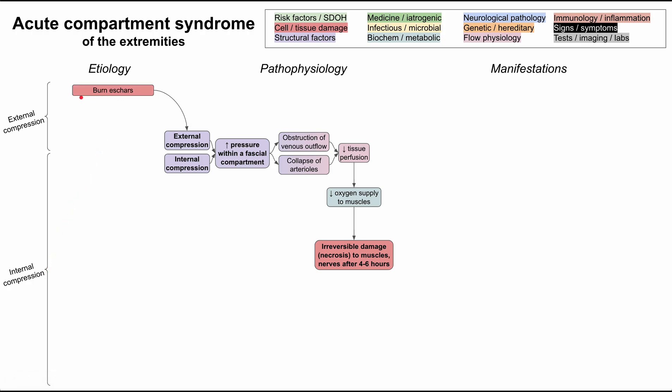Starting with external compression: burn eschars are circumferential burns that cause inflammation and tightening around a limb from the outside, causing external compression. It's also possible after a bone fracture to apply bandages or a cast too tight before the limb has stopped swelling. You must wait for the limb to reach its maximum circumference before applying any constrictive bandage or cast — otherwise the limb continues swelling under the constriction, leading to acute compartment syndrome.